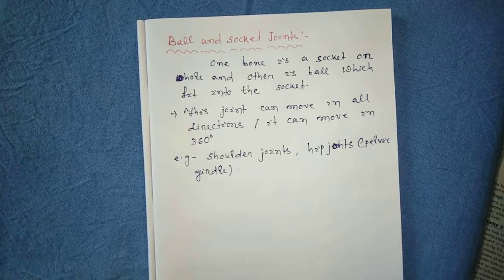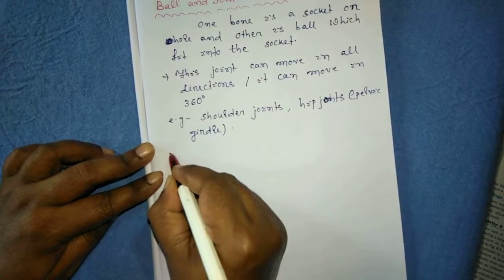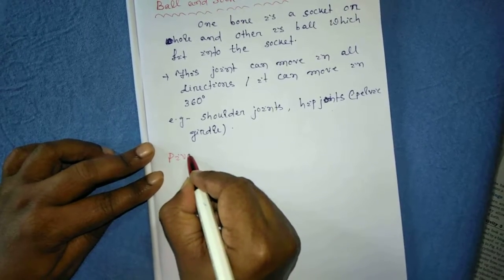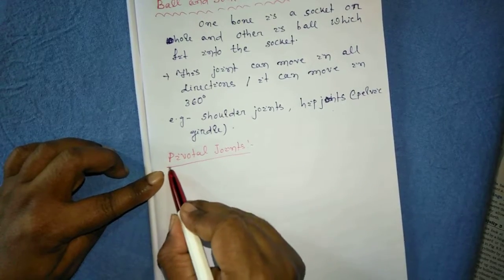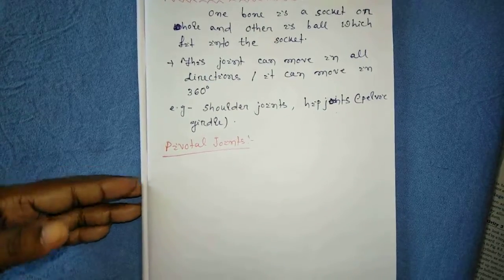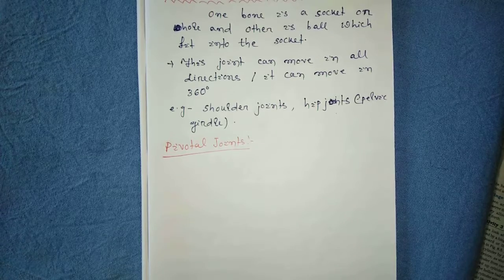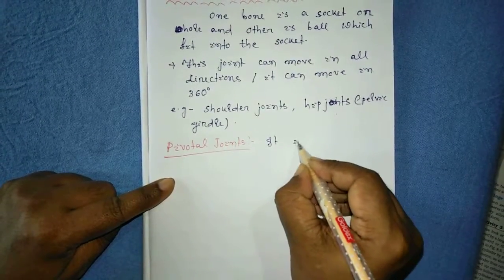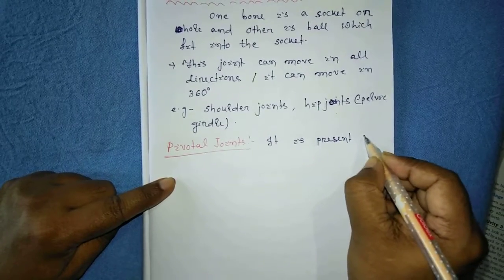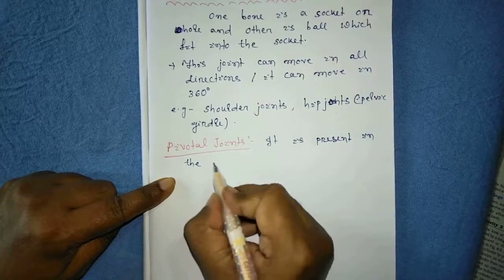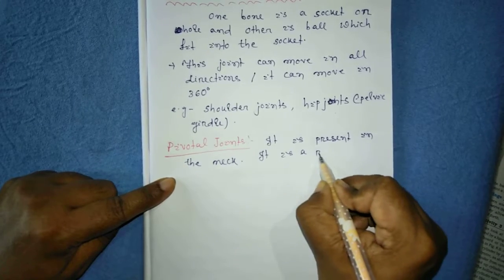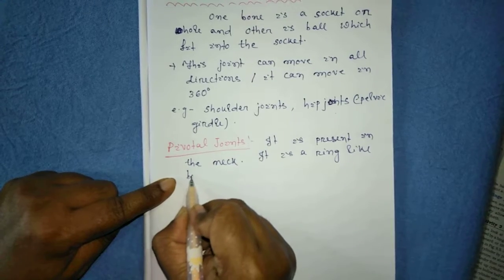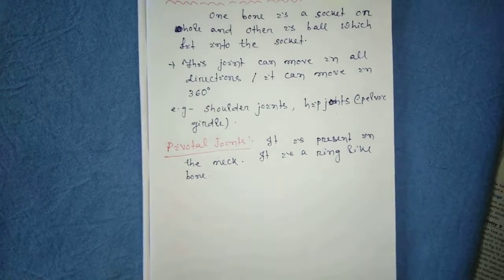Next we come to the second type of joint, that is the pivotal joint. The pivotal joint is an important joint. This joint is present in our neck, where the neck and the skull are attached with each other. It is a ring-like bone — not like the ball and socket.